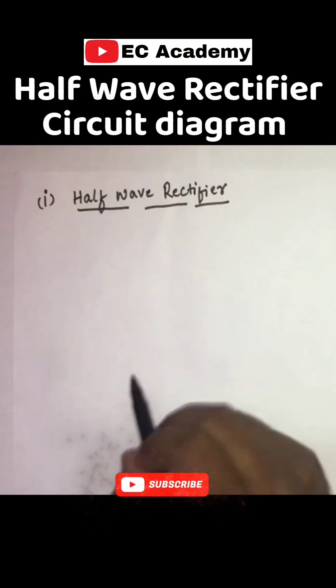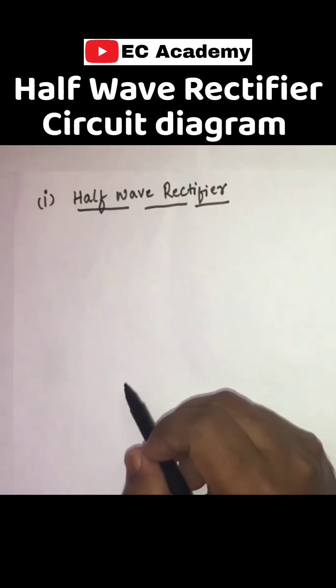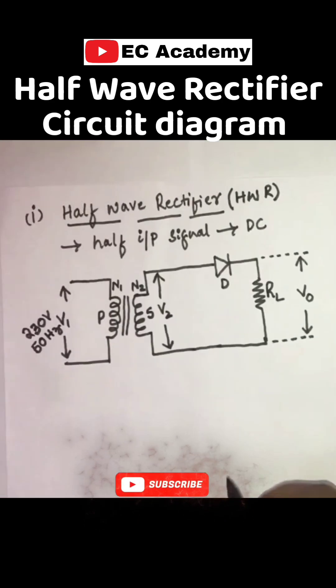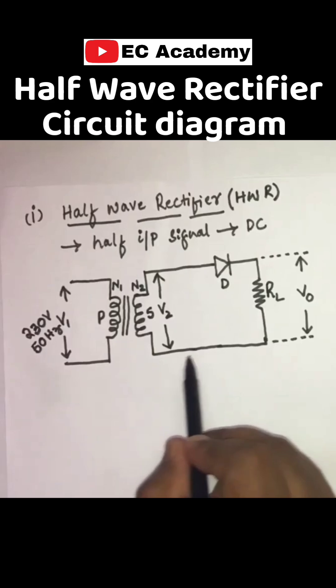Half-wave rectifier is a circuit that converts only half of the input AC signal into a DC signal. This shows the circuit of half-wave rectifier.